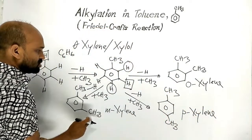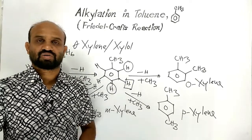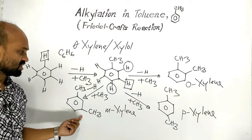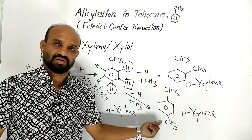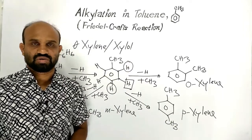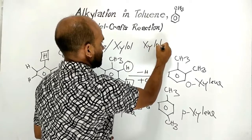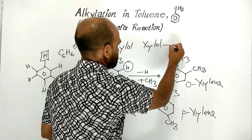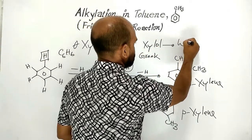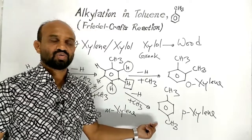These compounds are isomers of each other. They are called ortho-xylene, meta-xylene, and para-xylene — collectively called xylenes or xylols. The word 'xylol' comes from the Greek word meaning 'wood', because these xylenes are found in wood spirit.